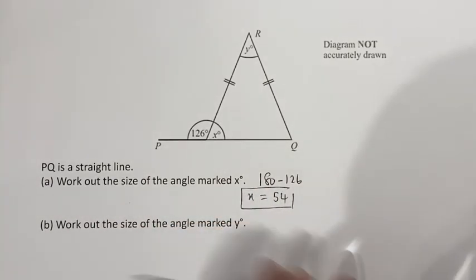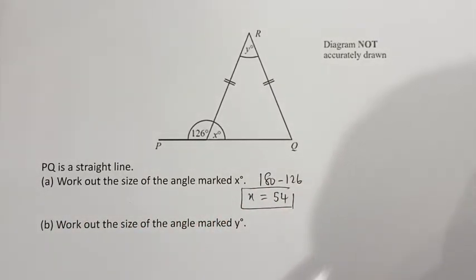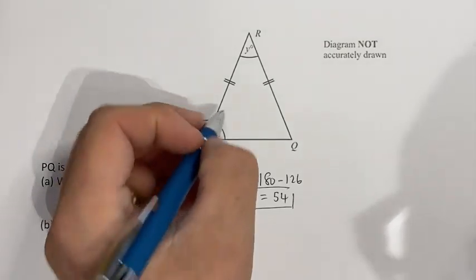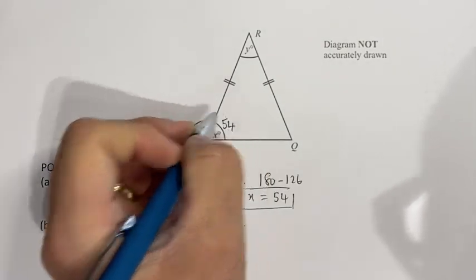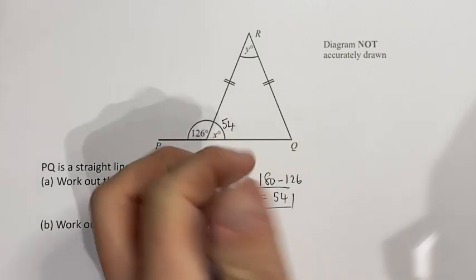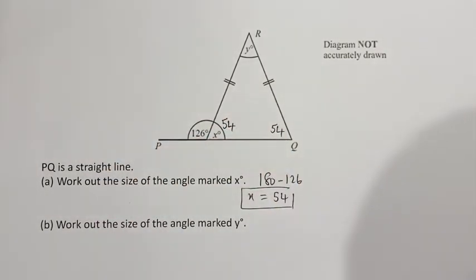That's angles on a straight line — if you're asked for a reason. As for y, we've established that base angle is 54, and because this is isosceles the base angles must be equal, so that must also be 54.